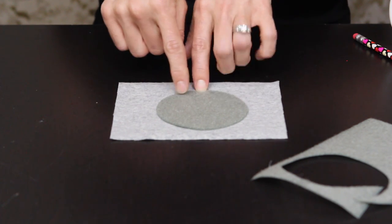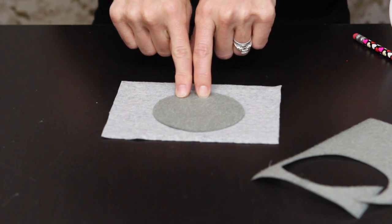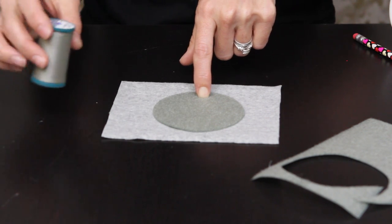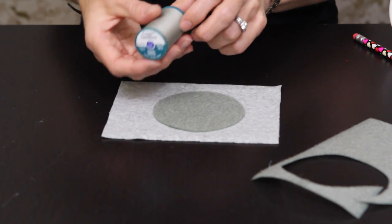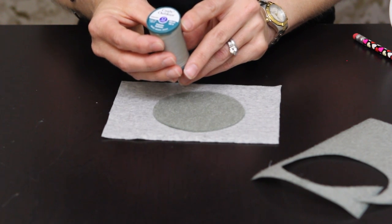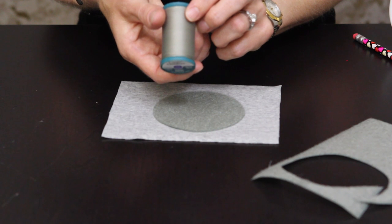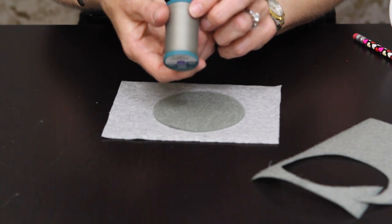The coordinating color of thread that I purchased that I could find that matched best with this foliage color is a Coates and Clark outdoor thread. And this is also a polyester thread, 100% polyester, and the color is 770.